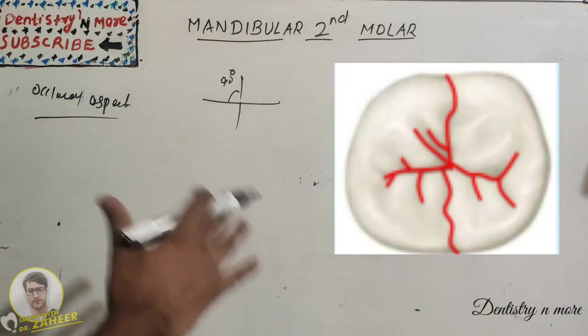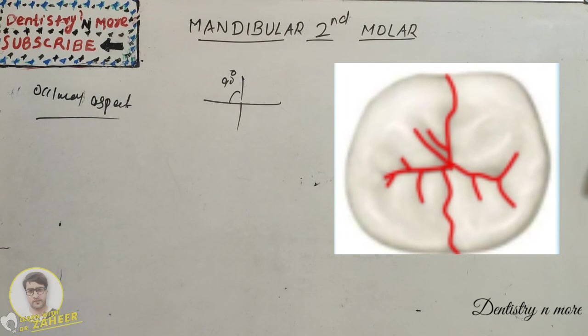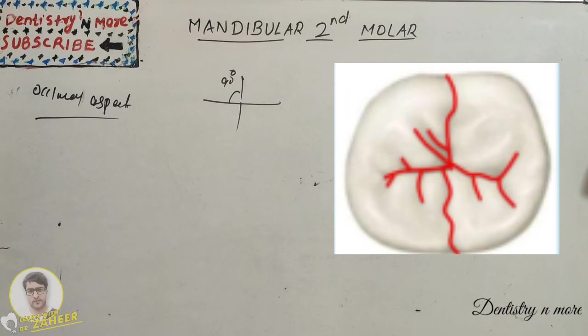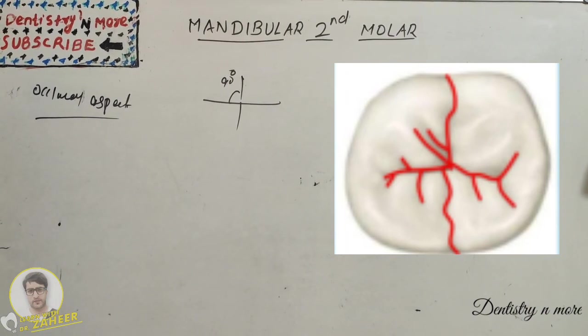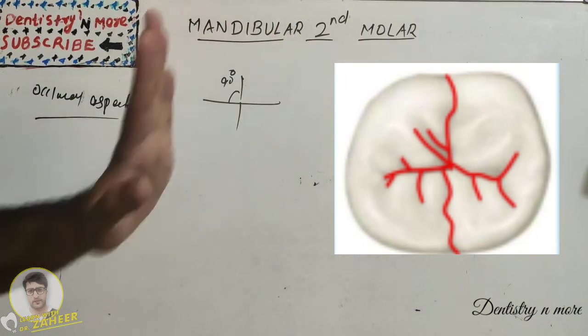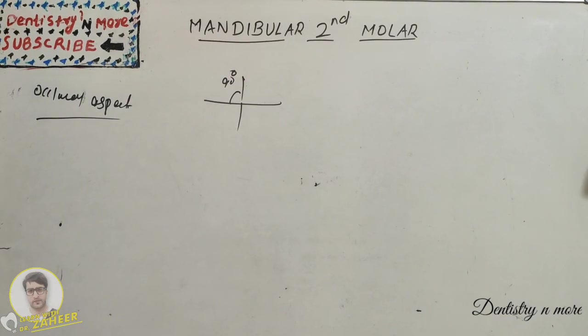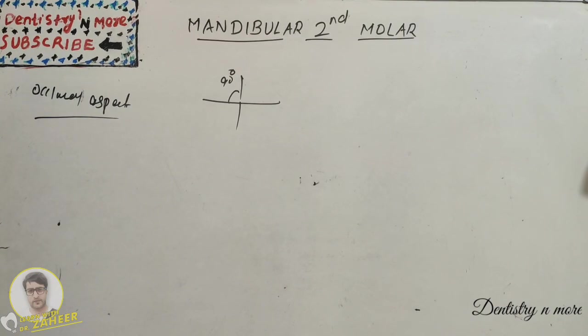So that is all about mandibular second molar. As I said, there are less features compared to the mandibular first molar. Mostly the first molars will be asked for your university papers. Sometimes the second molar, sometimes it will be a comparison of mandibular first and second molar. So whenever you are studying mandibular first molar, just go to the mandibular second molar and compare and study. It will be very much easier. Mandibular third molar is not very important from an exam point of view. I will come up with another topic in Dentistry and More. Thank you.